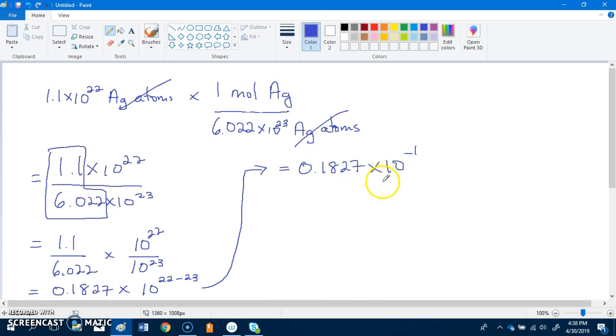What I like to do before I move this decimal is write this out as a regular number, not a scientific number. So 0.1827 times 10 to the negative 1 means we need to move this over one more spot. The actual answer is 0.01827.